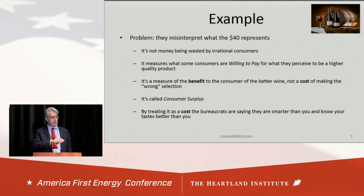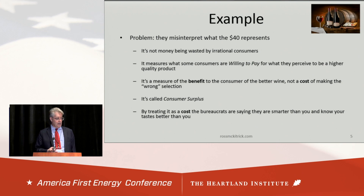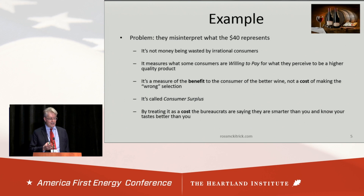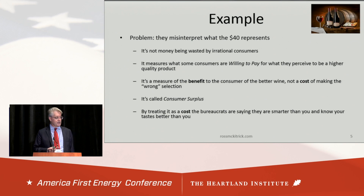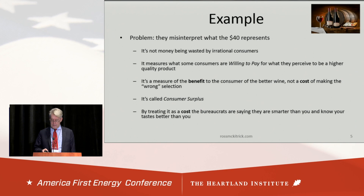The $40 is actually a lower bound. Presumably for each consumer, they're willing to pay $40 or more to get the better wine. So the consumer surplus for any one person may be much more than $40, but it won't be less than $40. By treating that as a cost, the bureaucrats are saying they're smarter than you — they know your preferences better than you, they know what you need better than you know yourself, and you're just being irrational. So by correcting your irrationality, we're going to save you money.